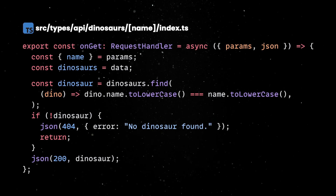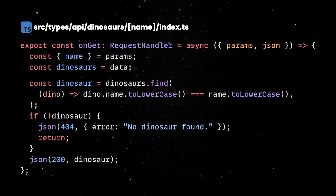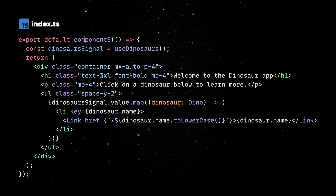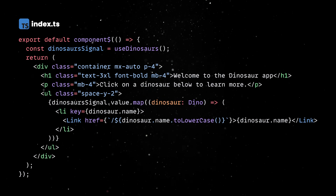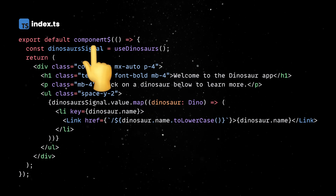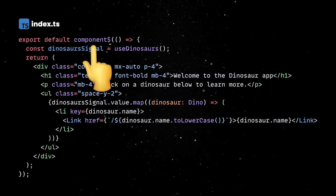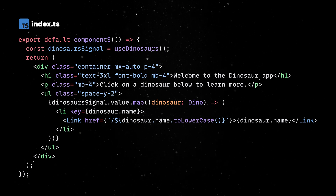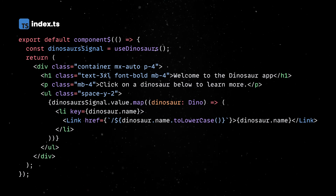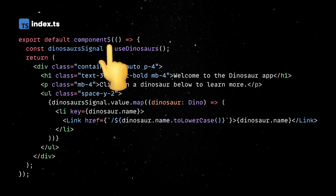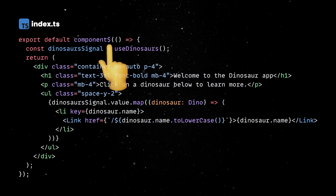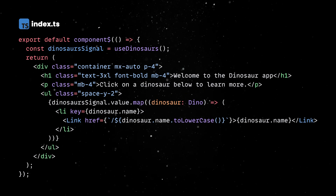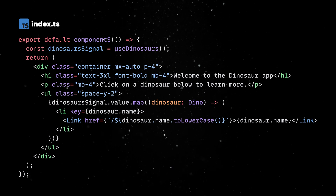Now that the backend API is wired up and serving data, let's create the index and the dinosaur detail pages. Qwik components have a similar look and feel as React components with a couple of caveats. The most important difference is that we'll use the special component function to define a resumable component. This is a key part of Qwik's unique architecture designed to optimize performance by minimizing the amount of JavaScript sent to the browser. Note that the $ sign indicates that the component is lazy-loaded. The framework analyzes the application, identifies parts that can be deferred, and only loads the JavaScript for those parts when they are needed.